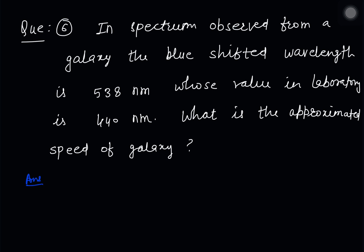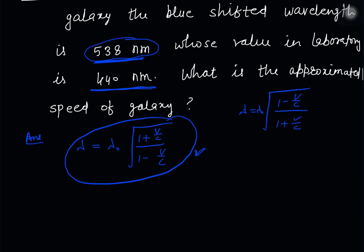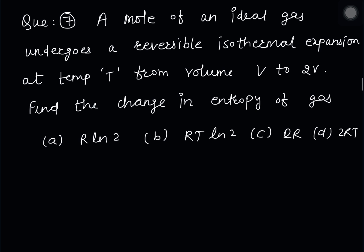This next question is from the special theory of relativity. The wavelength given is 440. We need to use the relativistic Doppler formula: λ = λ₀√((1 + v/c)/(1 − v/c)), and put in the given values.